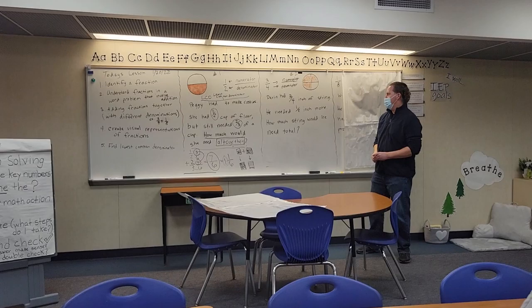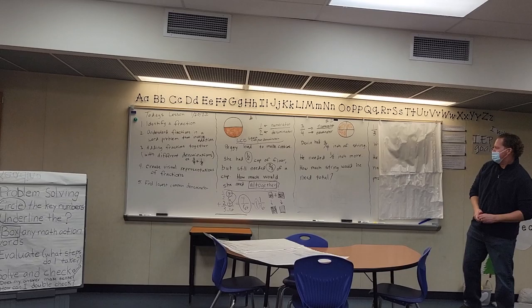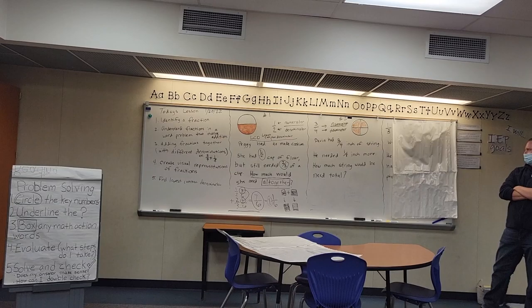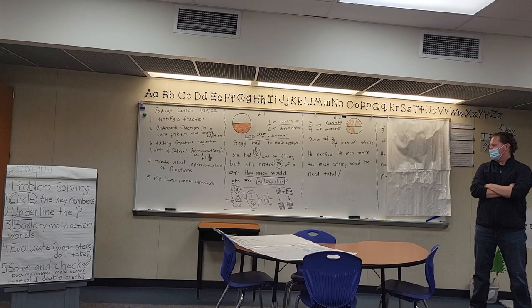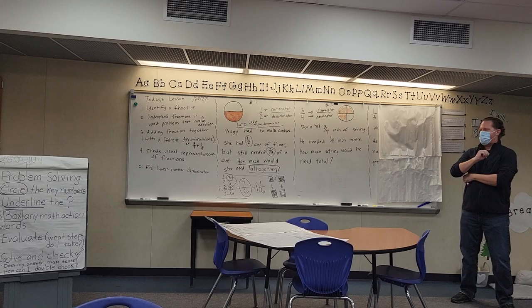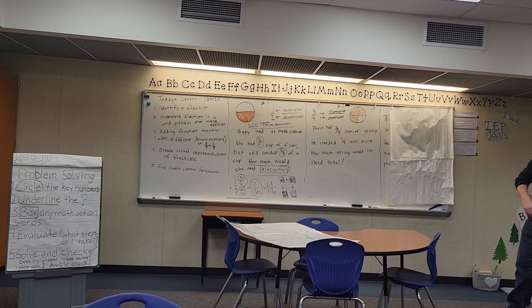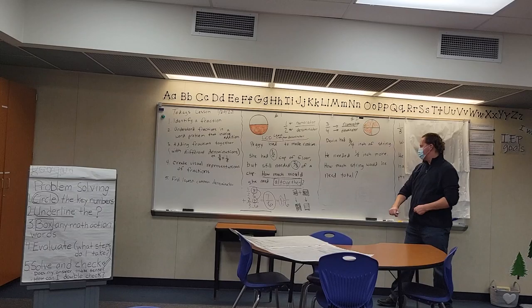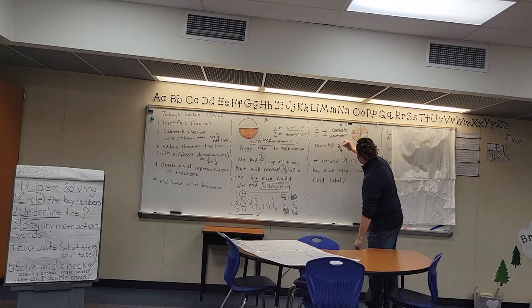Now I'm ready to read my word problem. Nathan, go ahead and read it. 'Devin had three-fourths of an inch of string. He needed one-eighth inch more. How much string would he need in total?' Now that we've read the word problem, what are my first steps according to our chart? Circle the key numbers. Which ones are they? Three-fourths and one-eighth. Very good — so I'm going to circle my key number fractions.